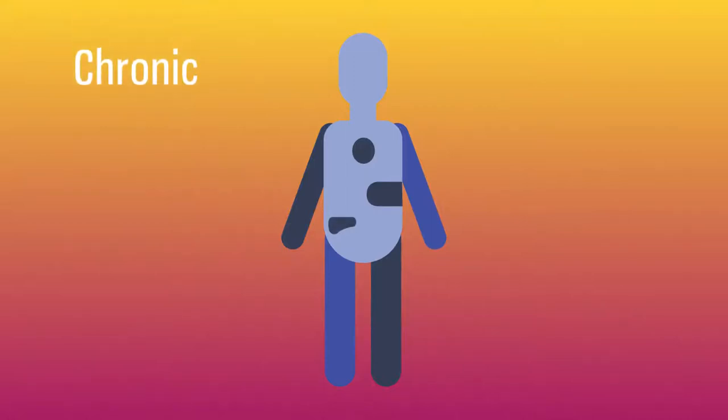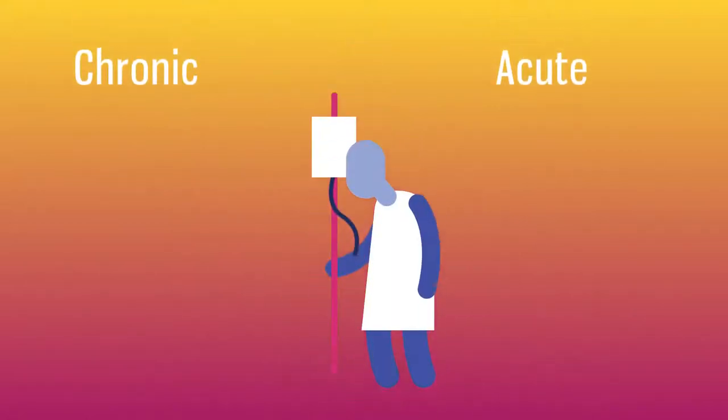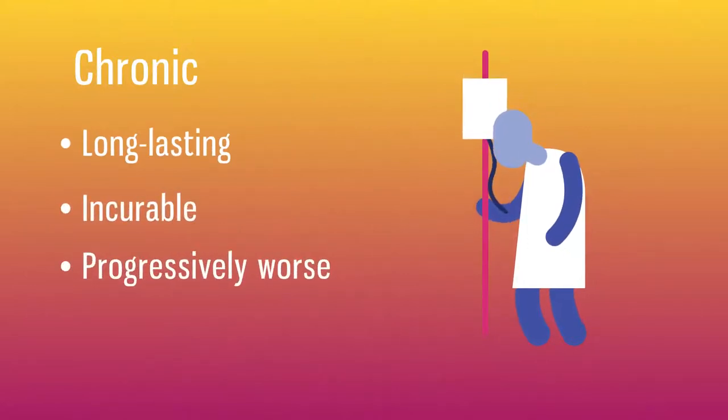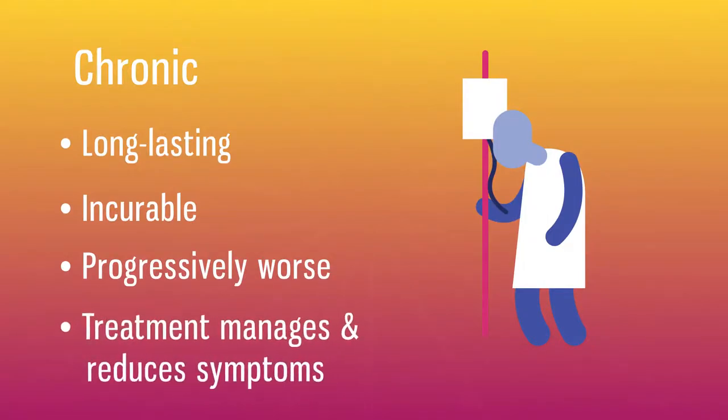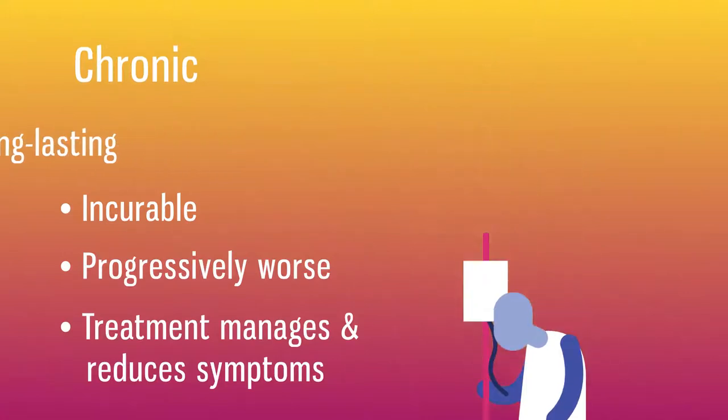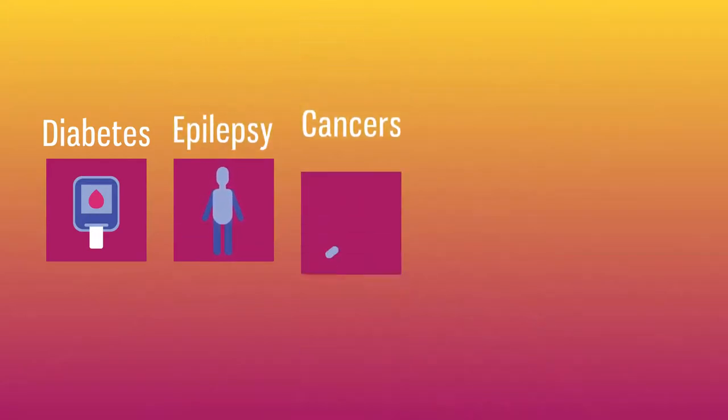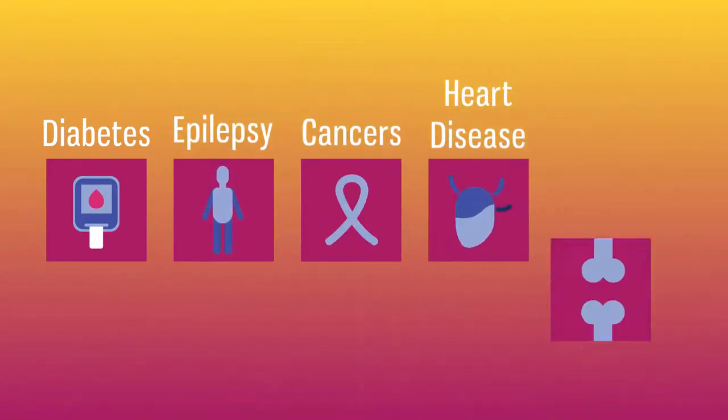Diseases can be chronic or acute. Chronic diseases are long-lasting. Often incurable, they get progressively worse over time. Medical treatment focuses on managing the disease to slow it down and reduce symptoms. Examples of chronic diseases include diabetes, epilepsy, most cancers, heart disease, and arthritis.